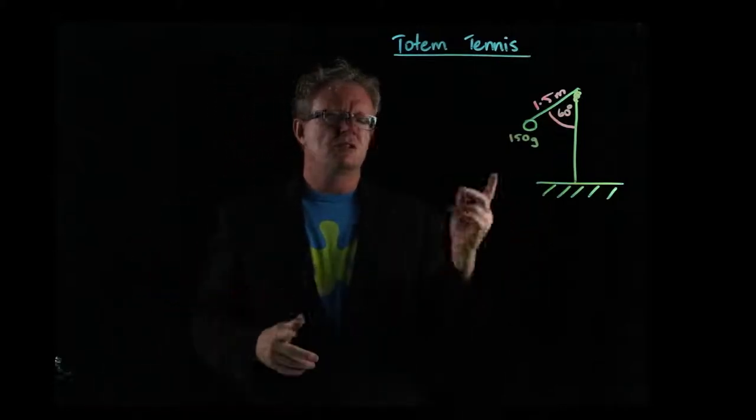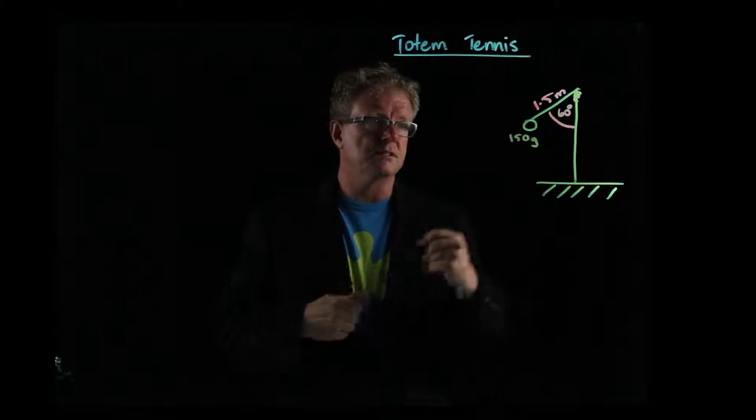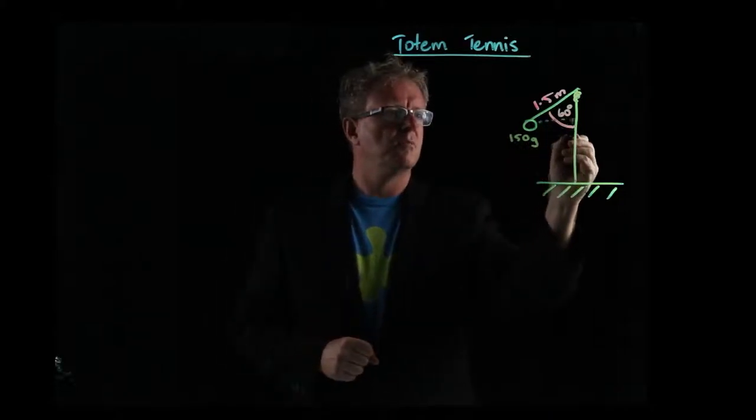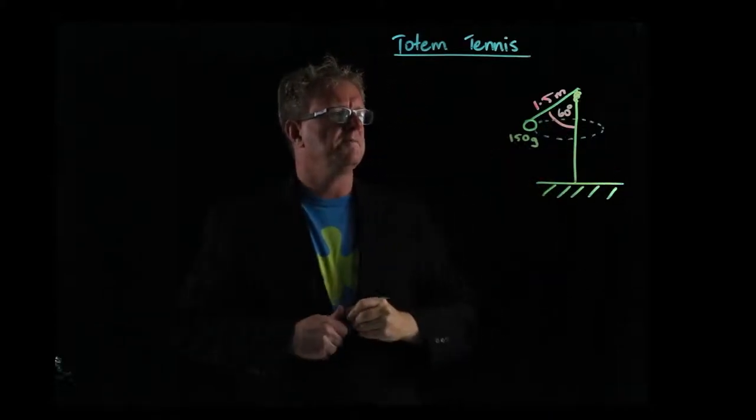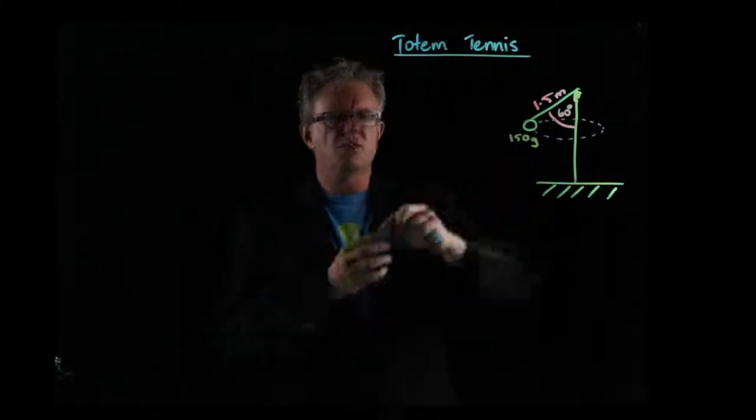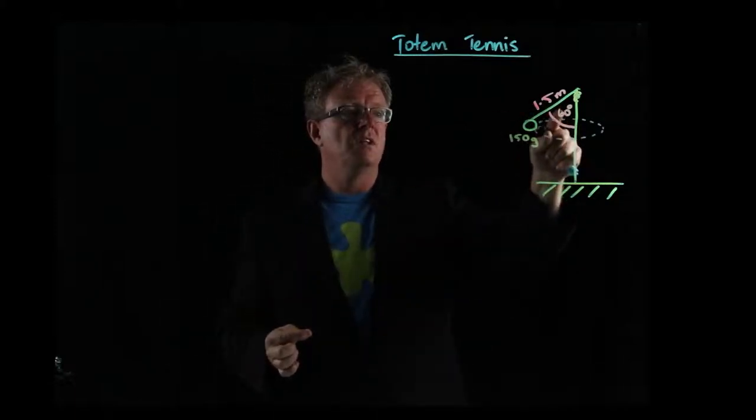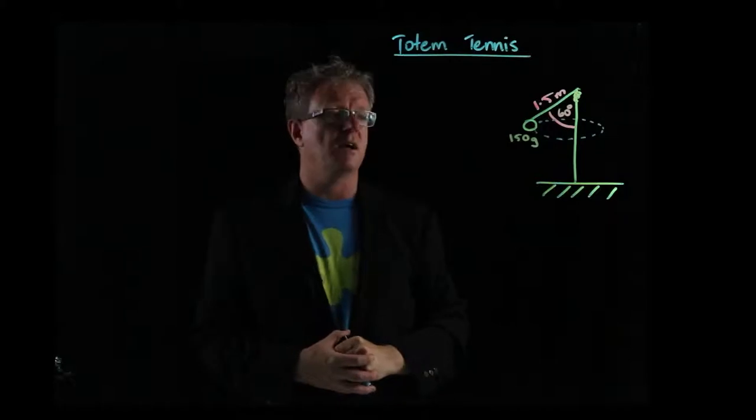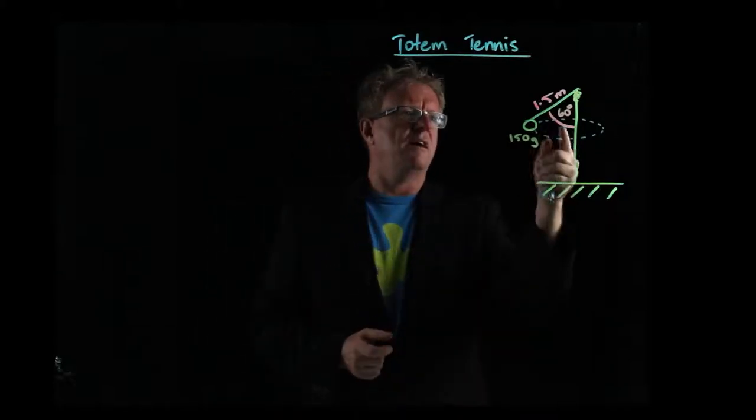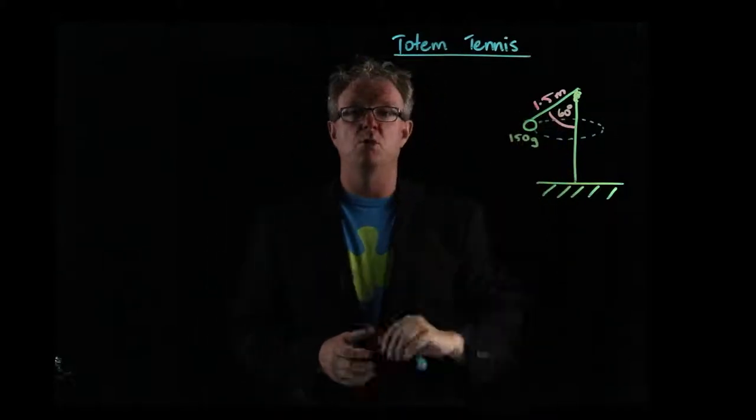So in this here, we've got circular motion by the ball as it's going around this pole. So this question here, the string is 1.5 meters long, the tennis ball is 150 grams, and we have a 60 degree angle at this moment in time.